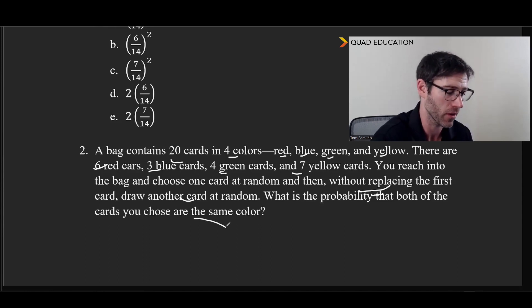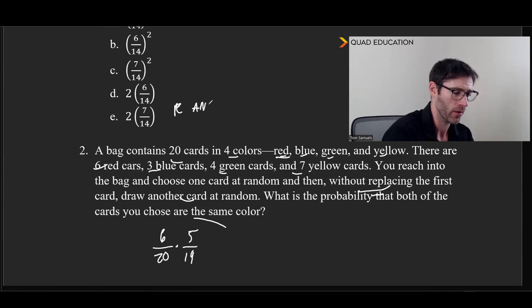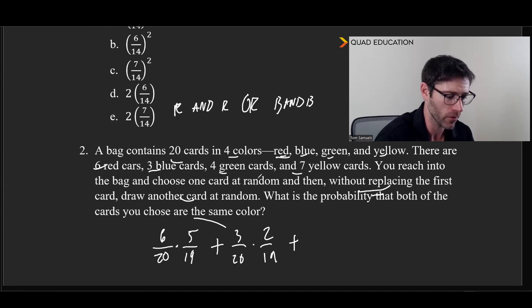So what's the probability that we choose red twice, basically? We would say that there are 6 red out of 20, and then again, if we did without replacing, 5 out of 19. But then the interesting thing is the 'or' part, because we have red and red, or blue and blue, or green and green, or yellow and yellow. And so then we do our addition there, which is going to be the probability of blue, which we're going to say is 3 out of 20, and then another one would be 2 out of 19. And we do another 'and', and we go through our green, which is going to be 4 out of 20, and then 3 out of 19. And we do our last one, the yellow, which is 7 out of 20, and 6 out of 19.